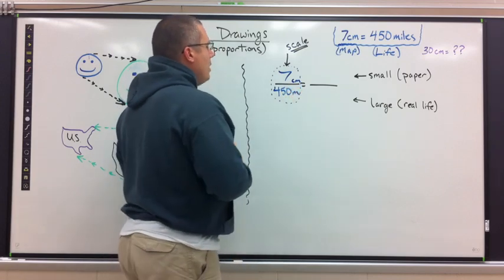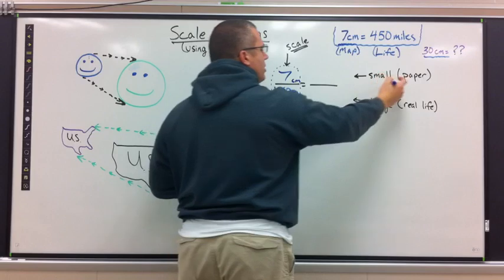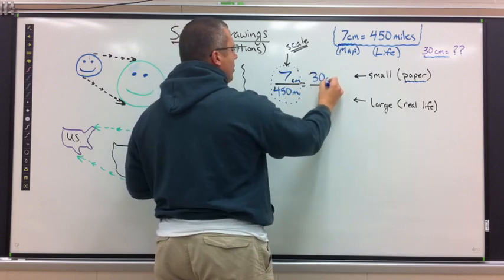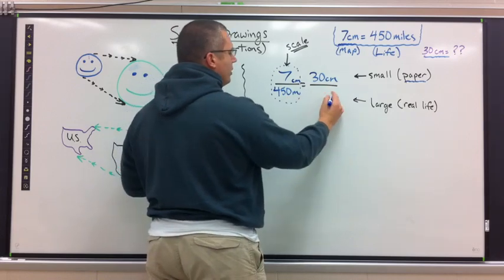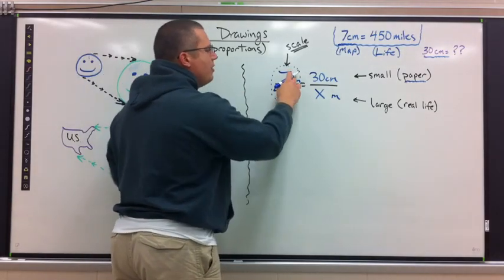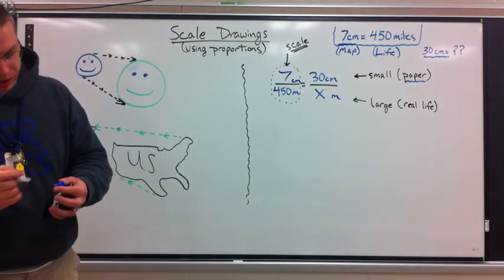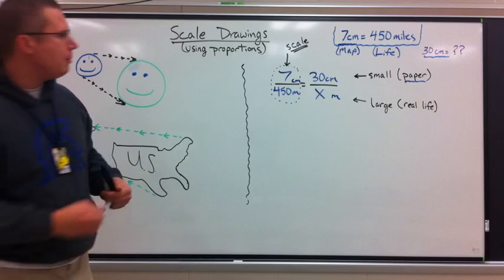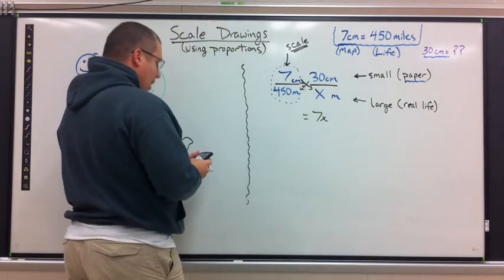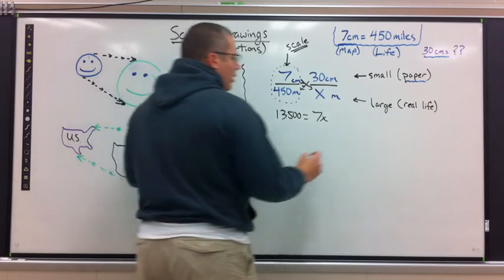The question asks: what would 30 centimeters on the map be equal to in miles? 30 centimeters is the paper measurement, so 30 has to match up with the same label and goes on top. For miles, we don't know the answer, so we put x. Cross multiplying will work every single time no matter what the numbers are. Multiply 30 times 450 and 7 times x.